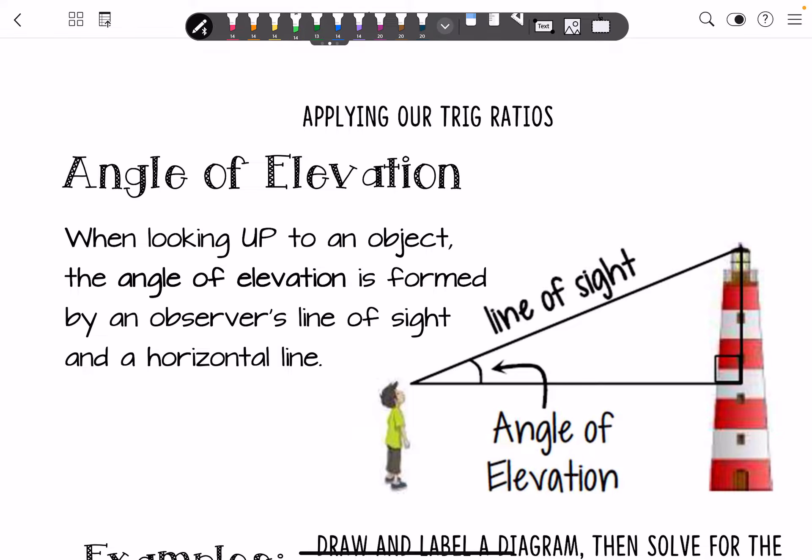First is going to be the angle of elevation. So when looking up to an object, the angle of elevation is formed by an observer's line of sight and a horizontal line. So right here, this little guy is looking up to the top of the lighthouse and that angle that is formed is the angle of elevation. Notice it's still a right triangle right here.